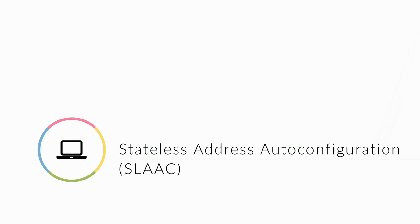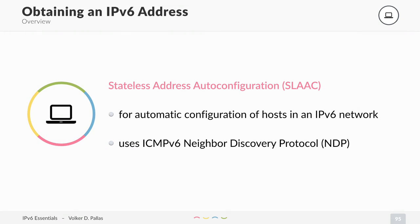Let's look at the details of the Stateless Address Auto-Configuration feature of IPv6. It can be used for the automatic configuration of hosts, which you had to use DHCP with IPv4 before. You don't have to do that anymore. It is completely reliant on the ICMPv6 Neighbor Discovery Protocol.